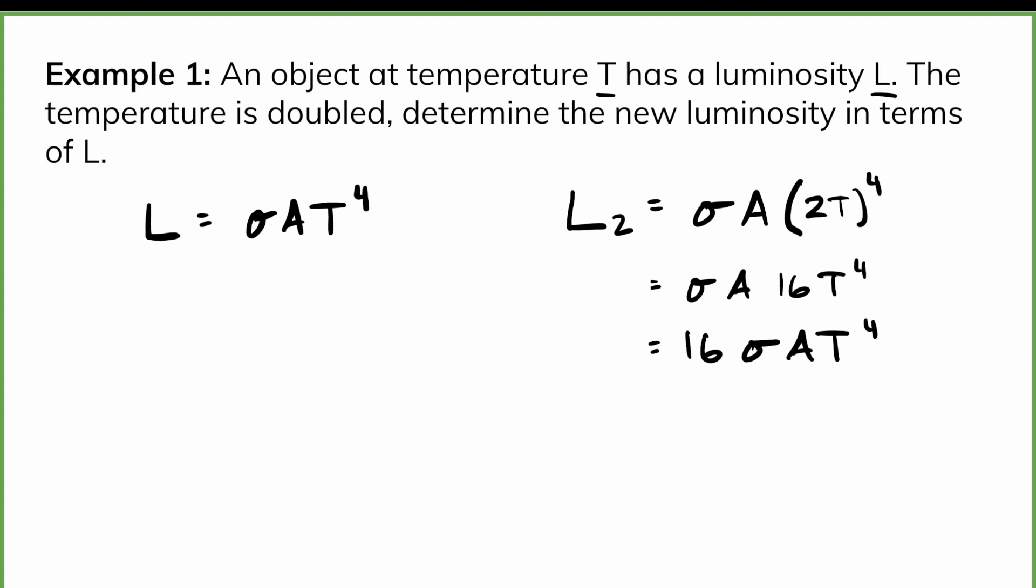Well, what is this last three terms here, sigma A T to the power of 4? If I look, that's what's here. So what the question is asking me to do is determine the new luminosity in terms of L. And so I can replace all of these terms with L, so I know that the new luminosity, L2, is equal to 16L. So as you can see, even doubling the temperature actually increases the luminosity 16-fold. So that power of 4 makes a very big difference for objects and their luminosity.